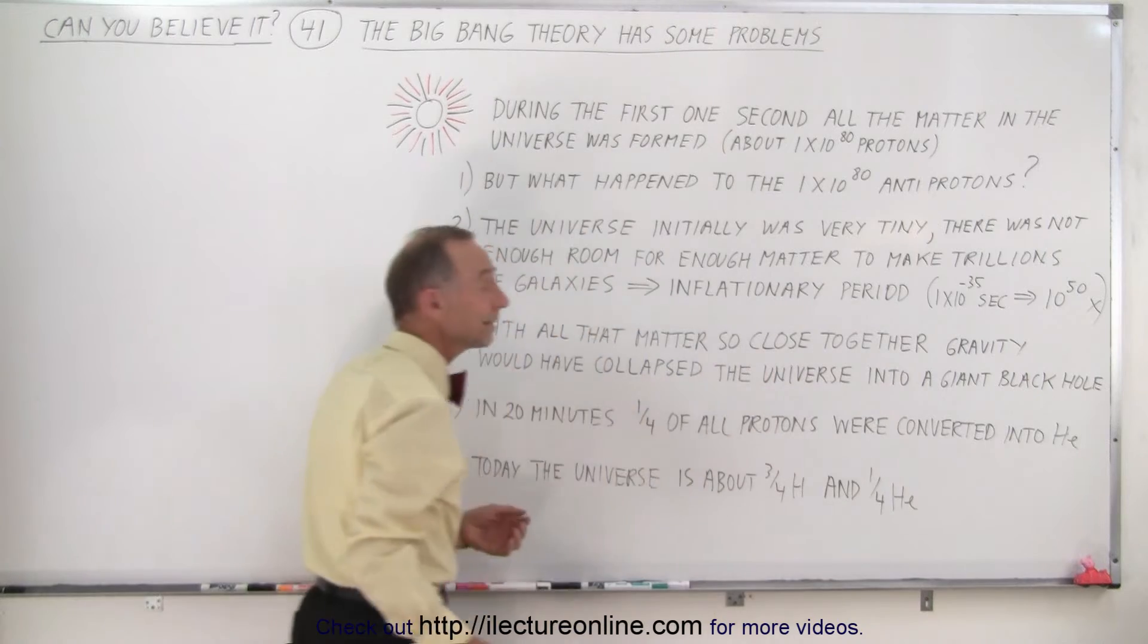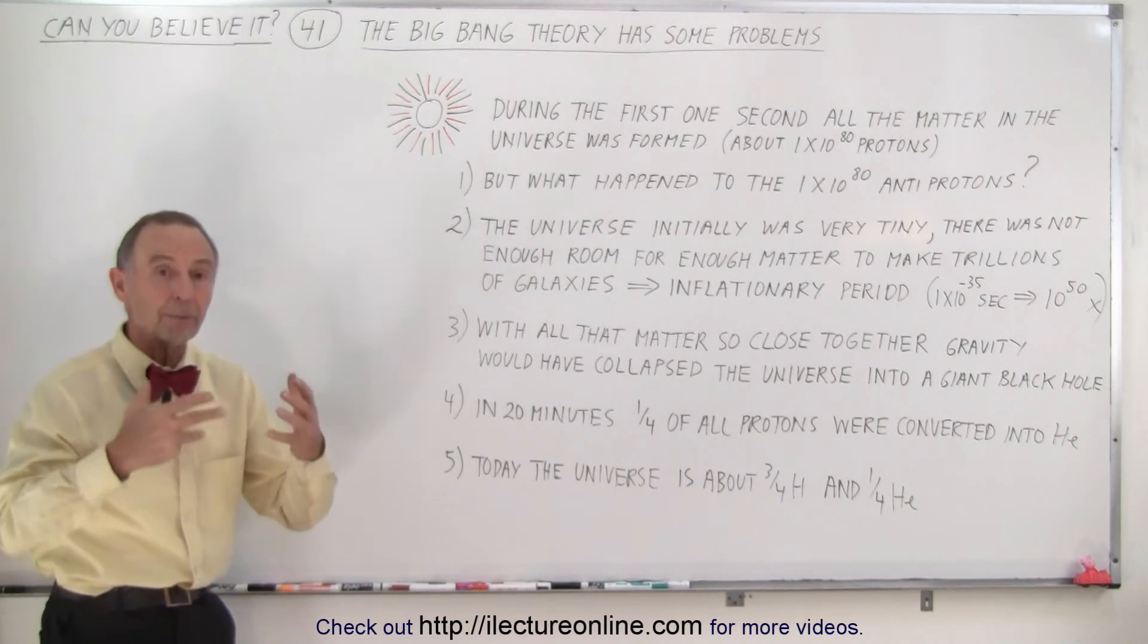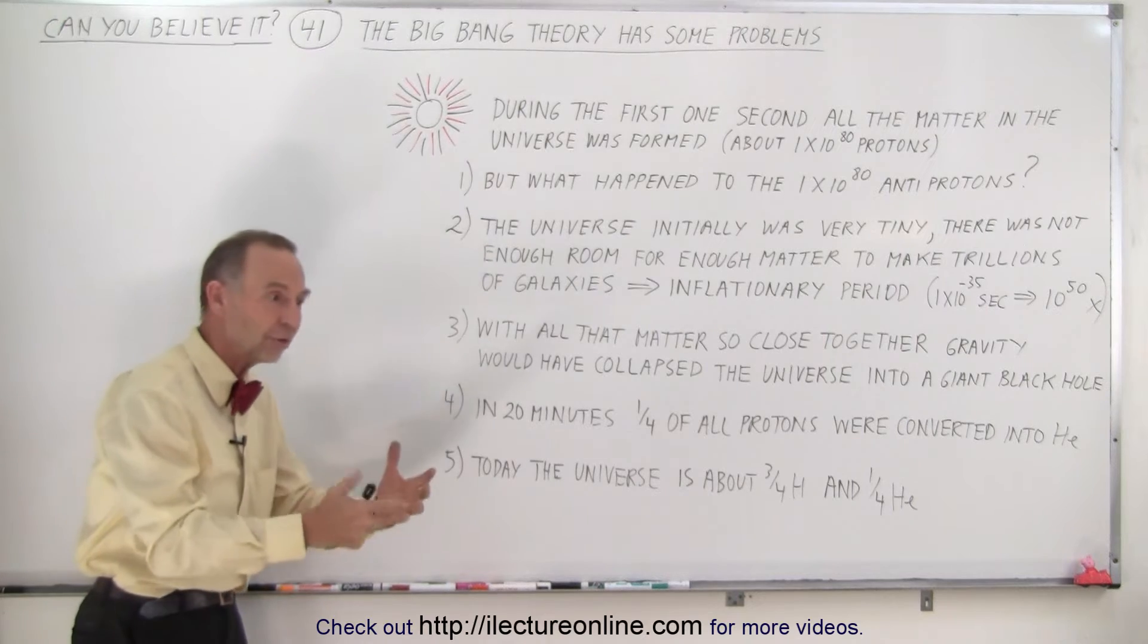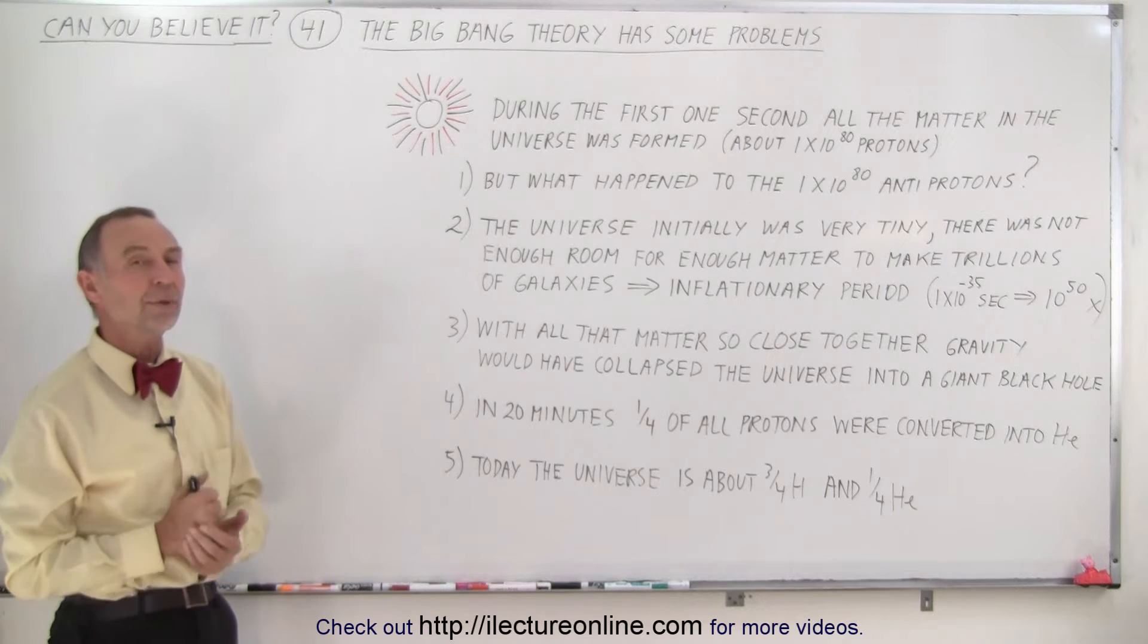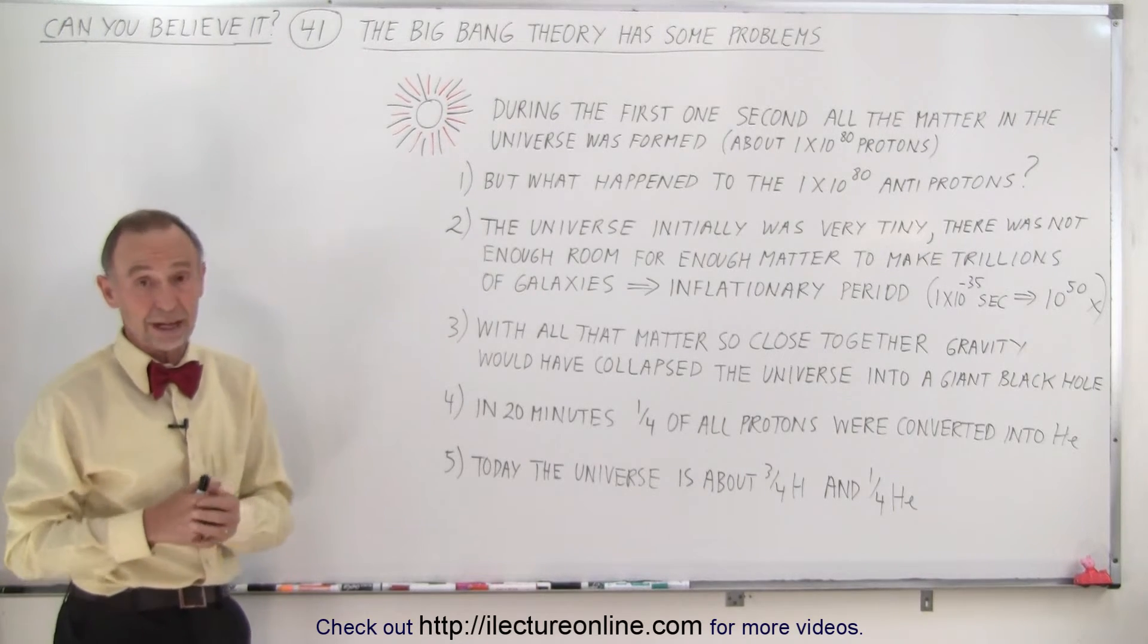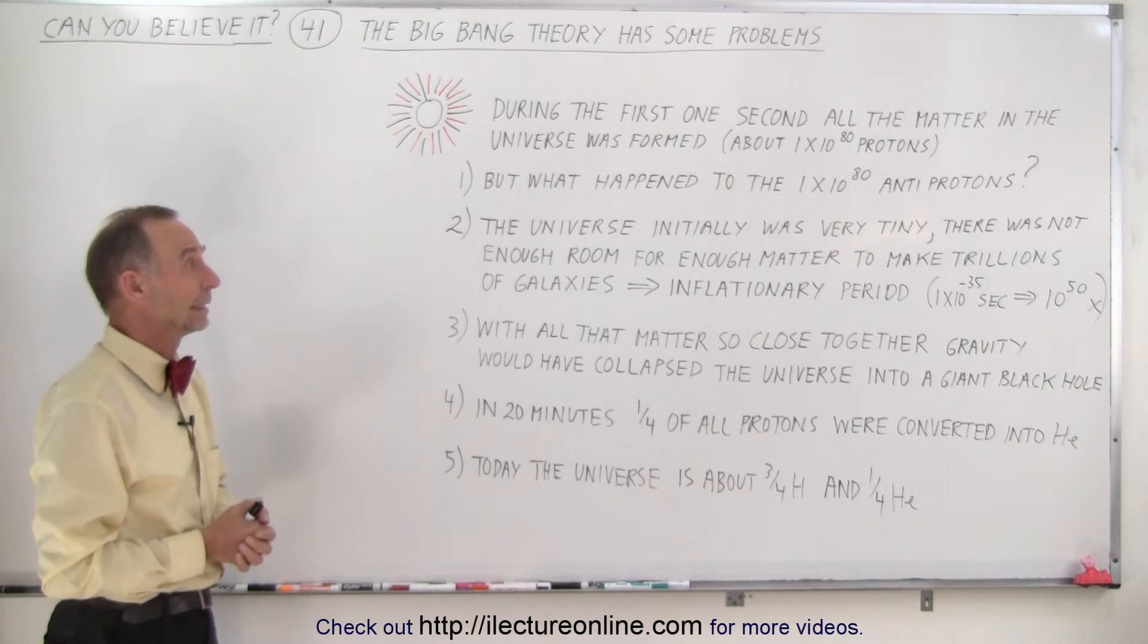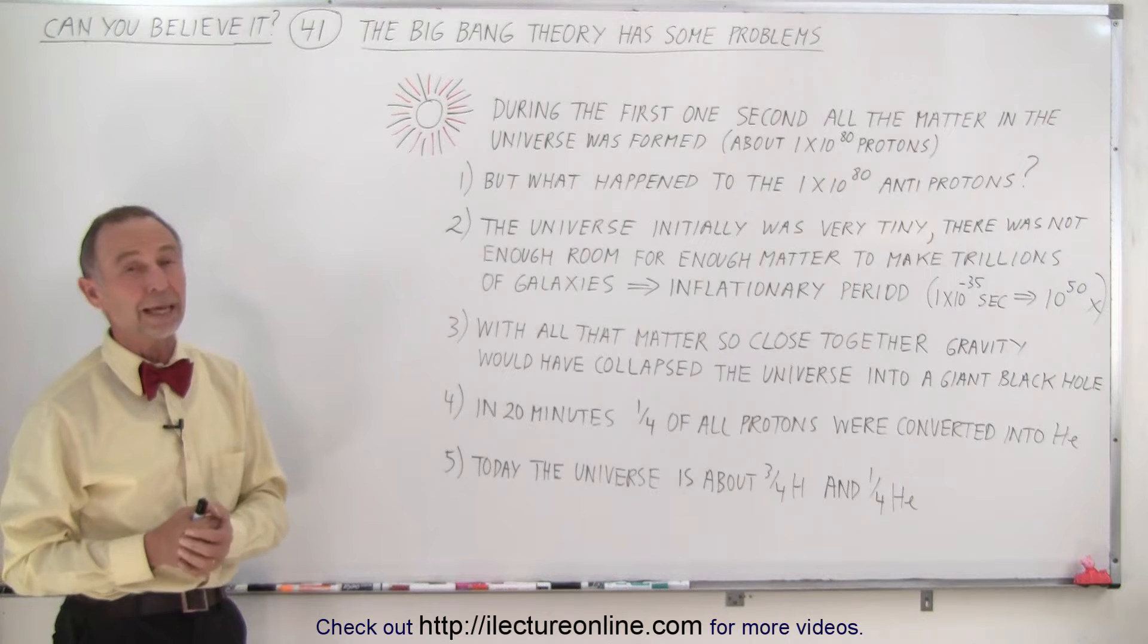So where are those missing antiprotons? And there's a lot of them. 1 times 10 to the 80 is not a small number, that's a huge number of antiprotons, the same number of antiprotons as protons that can form trillions of galaxies. We have no explanation for that. I've seen explanations in textbooks, even textbooks that I've used in the classroom before, but they're not very satisfactory. It's a big problem that we can't explain.